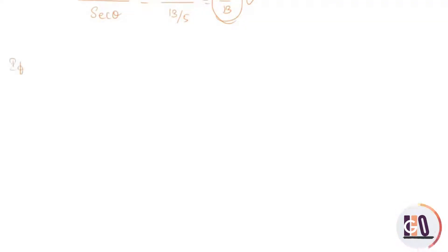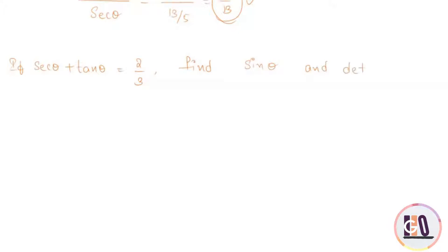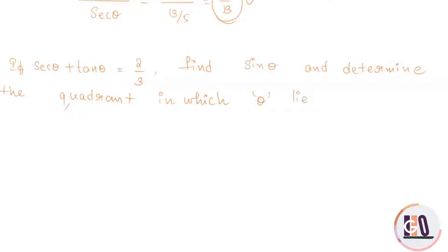The question is: if sec θ plus tan θ equals 2 by 3, find sin θ and determine the quadrant in which θ lies.